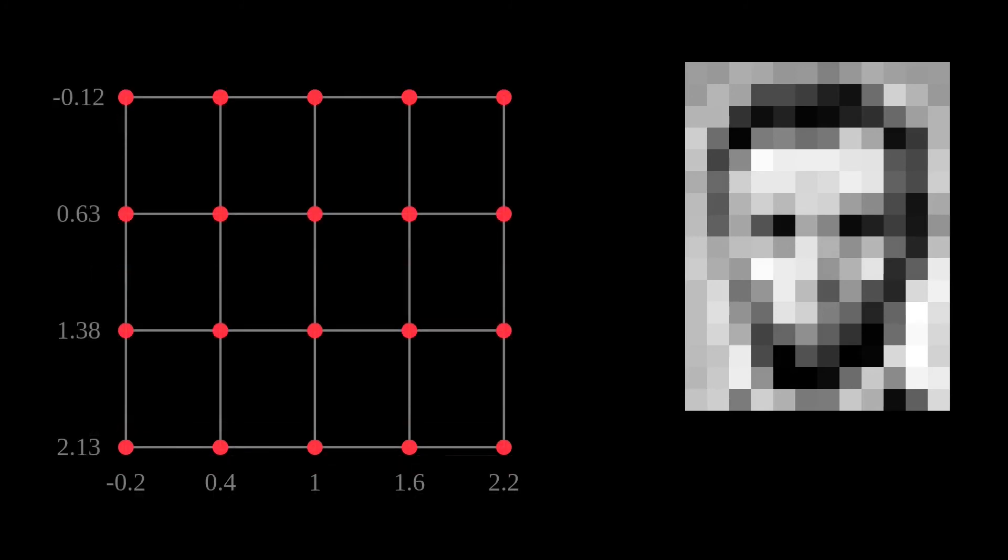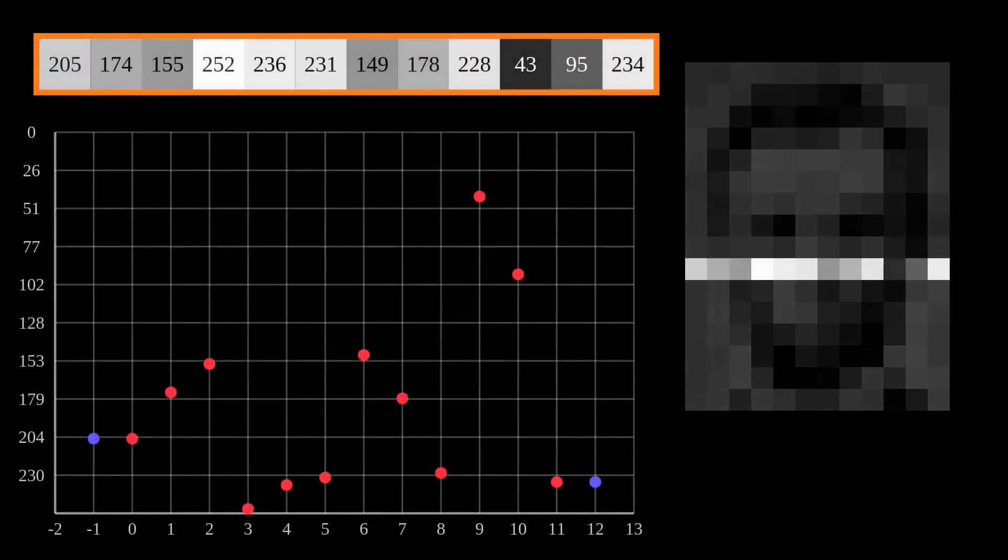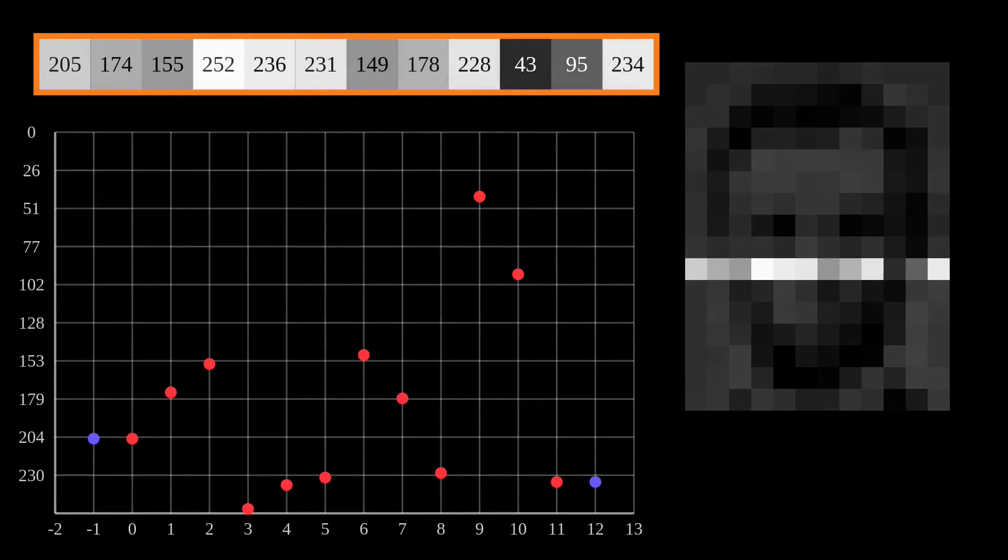To illustrate this procedure, let's take the tenth row of this image and plot the pixels. As we saw at the beginning of the video, to interpolate a set of points, we construct a spline that passes through each point using a third-degree polynomial function. And we do it piecewise, using four points for each piece.